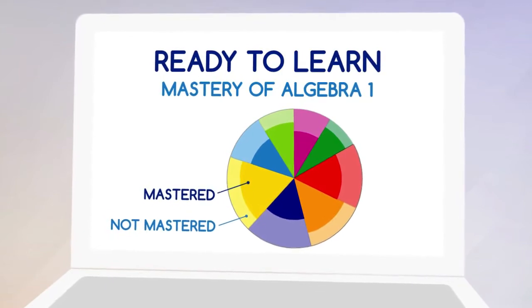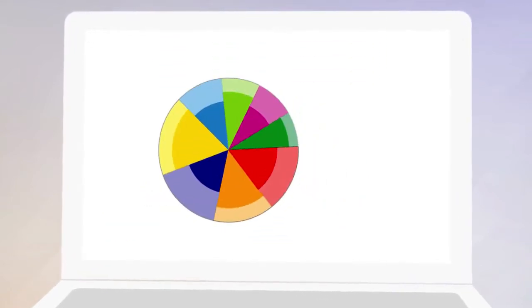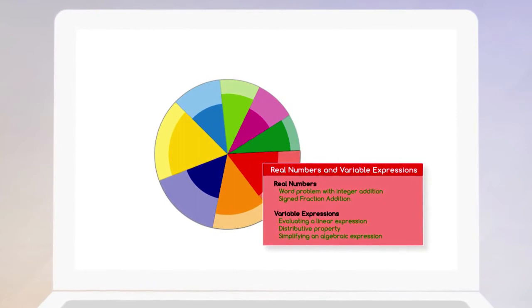The student sees their knowledge state as a multi-colored pie chart, which lets them know what topics are available to explore.